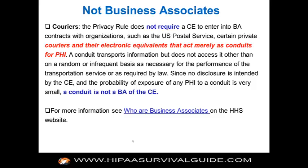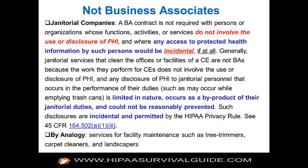HHS has provided 'who are business associates' guidelines, and anywhere you see a URL on these slides you can click through to the HIPAA Survival Guide or other reference sites for additional information. Also not business associates: janitorial companies — because they do not involve the use or disclosure of PHI. Any access to protected health information by such persons would be incidental to their business function, and therefore they would not be considered business associates.